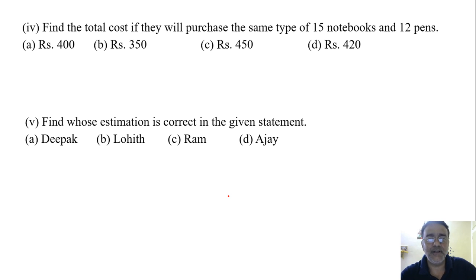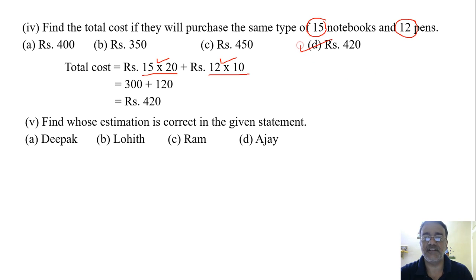Find the total cost if they will purchase the same type of 15 notebooks and 12 pens. So 1 notebook we got 20 rupees. So 15 x 20. And 1 pen we got the cost of 1 pen we got 10. So 12 x 10. So total cost will be 15 x 20 plus 12 x 10. So 300 plus 120. So what is the total cost? 420. Right. 420. So debit.